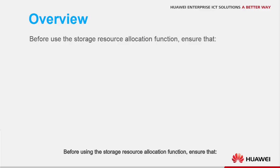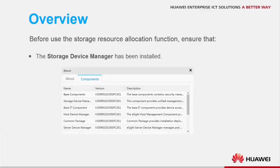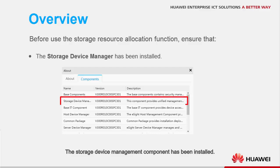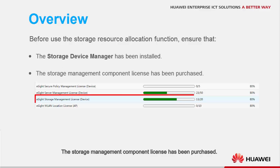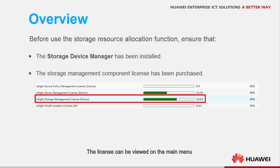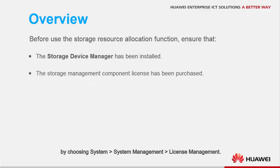Before using the storage resource allocation function, ensure that the storage device management component has been installed. The installed component can be viewed on the main menu. Also ensure that the storage management component license has been purchased. The license can be viewed on the main menu by choosing System, System Management, License Management.